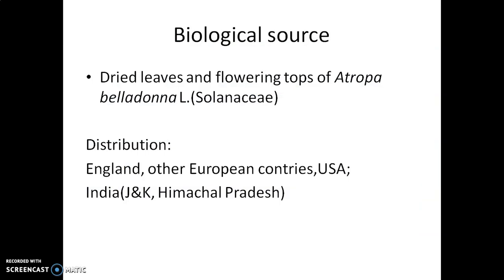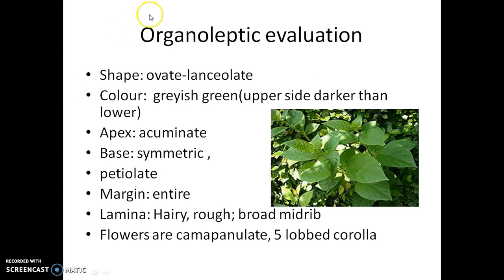The biological source of the drug consists of dried leaves and flowering tops of Atropa belladonna, belonging to family Solanaceae. The drug is distributed throughout inland Europe and other European countries. It is also cultivated in the USA. In India, it is known as Black Cherry; different species of Atropa are cultivated specially in Jammu and Kashmir and Himachal Pradesh.